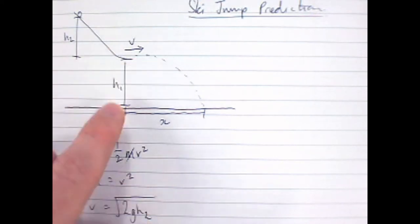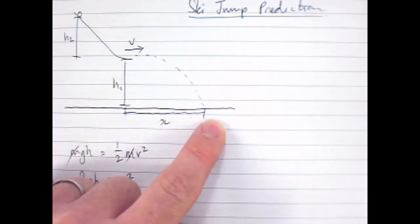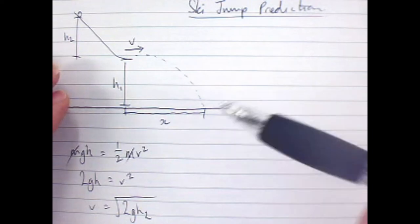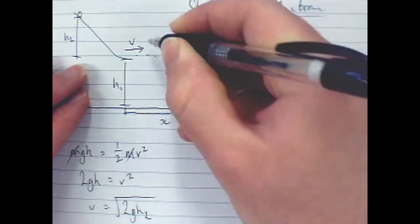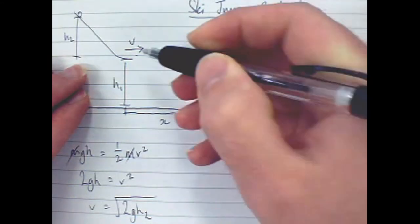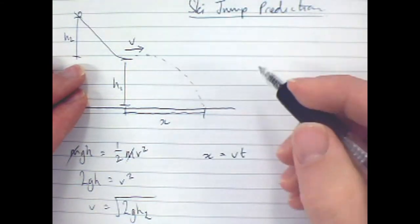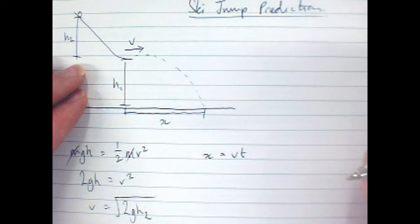Once I've got my expression for velocity, the next thing I need is an expression for this distance here. Well, this distance here is going to be speed times time. So, how can I work out the time this projectile is going to be in the air for?